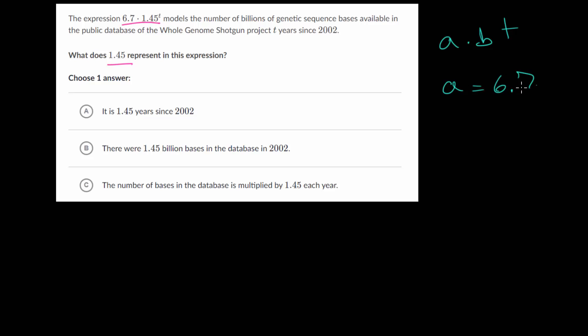So a is 6.7, and b, we know that's our growth rate, that is the number raised to the t power, that is 1.45. So essentially, the 1.45 just represents the amount we'll multiply by when going from one year to the next. When t equals 0, that's 6.7. In our formula, we would have 1.45 to the 0, so that's 1 multiplied by 6.7. So the billions of genetic sequence bases available in the database in that first year, in 2002, would be 6.7, since we're going to be taking our growth rate and raising it to the 0 power, which is just 1, so you get 6.7. And again, those units are in billions of genetic sequence bases available.